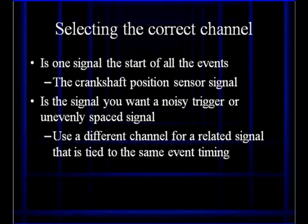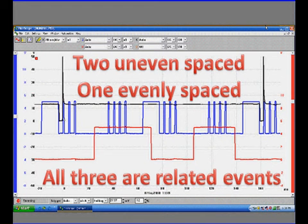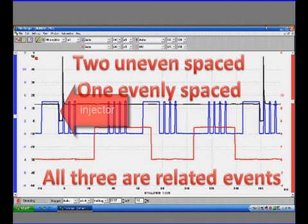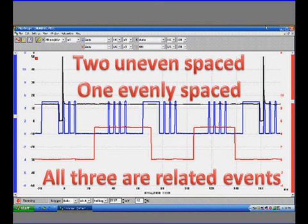We showed you in an earlier example where we used an injector waveform evenly spaced to synchronize an unevenly spaced crank and cam signal — that's the type of technique we're talking about. Right here, all three events are related: two unevenly spaced, one evenly spaced. We chose channel C in order to stabilize this pattern. C is the black injector pulse width. We wanted 720 degrees of rotation and selected a sweep speed that would give it to us, but the triggering became difficult because of the unevenly spaced signals. So you pick the channel that's going to give you what you want — that's the point.